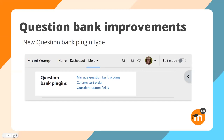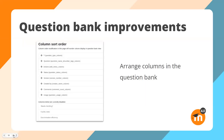New in Moodle 4.0 is a question bank plugin type with lots of extra features such as question versioning and question statistics. The question bank improvements project is funded by a number of European universities and is continuing in Moodle 4.1. One new feature is the ability to set up question custom fields, which appear as a column in the question bank. Another feature is being able to define the order of columns. Each feature is now a plugin which you can disable — for example, disabling discriminative efficiency statistics if teachers won't use them.